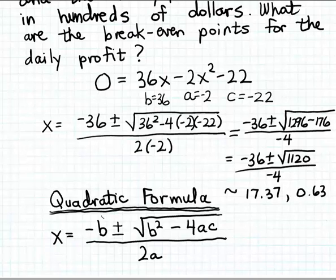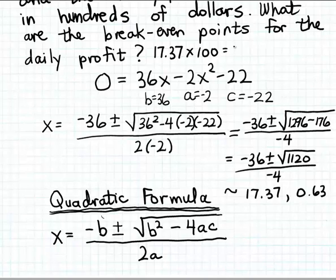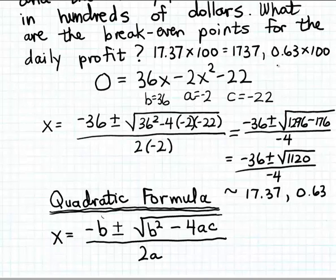This tells us the daily sales amounts for Perry's tobacco that will lead him to break even — no profit, but also no loss. One break-even point is 17.37 times 100, which is approximately 1,737 pounds of tobacco per day. The second break-even point is 0.63 times 100, which is 63 pounds of tobacco per day. So if Perry sells either 1,737 pounds or 63 pounds per day, he breaks even.